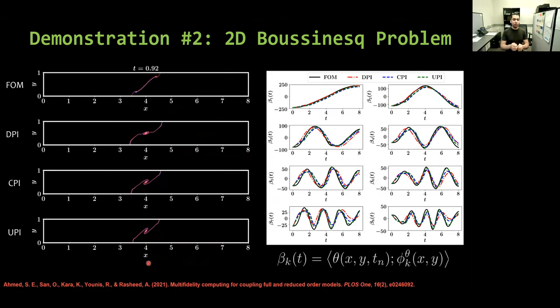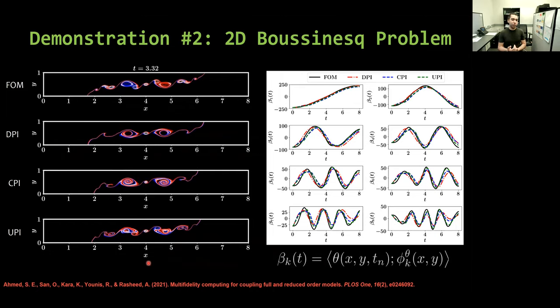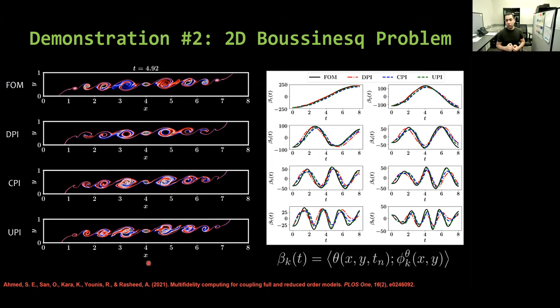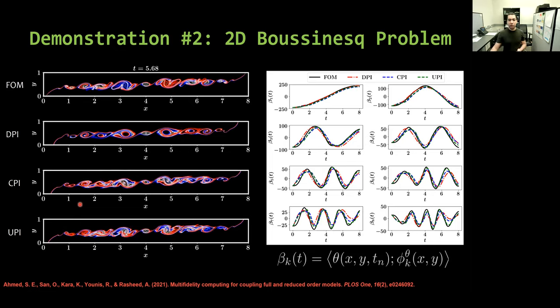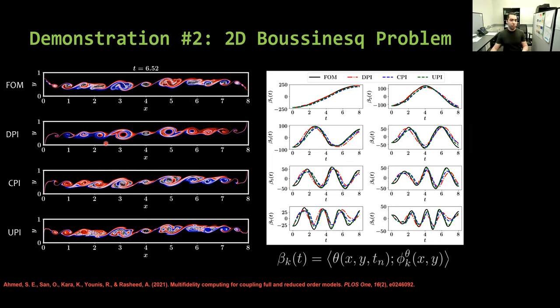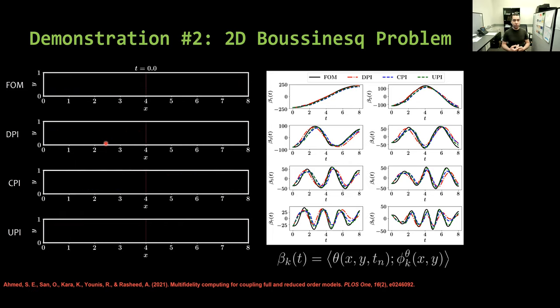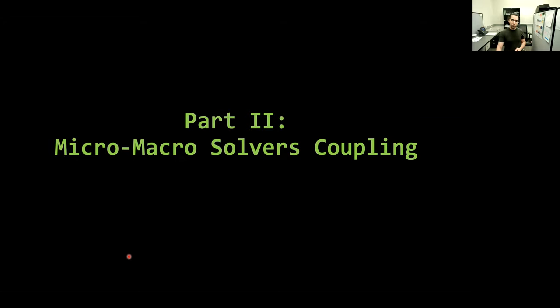As I mentioned before, a correction in the full-order space with 2D or 3D problems becomes cumbersome. So in this case, we only consider the interface learning correction in the low-order space. Here we see that the CPI is adding a correction to the DPI solution in the low-order space before reconstruction, while here in the UPI recovers or regains some of the finer details by providing super-resolution.